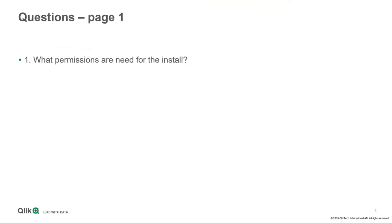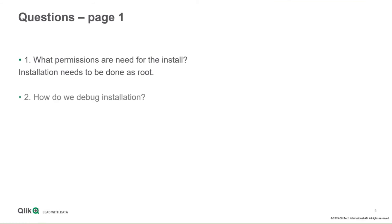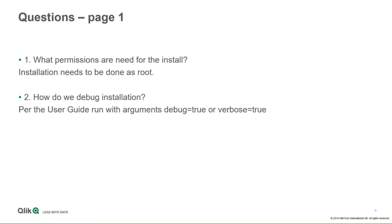Some questions we received: What permissions are needed for the install? Install and update must be done as root. The root user has access to everything, but you need to make sure the UMASK is set so that other users will have access, because the install runs as root but then changes ownership of all files to the Attunity user. How do we debug the installation? When you run RPM, you can pass arguments using two variables called debug and verbose, which are by default set to false. If you set them to true, the installation will print out more information.